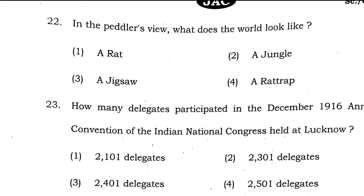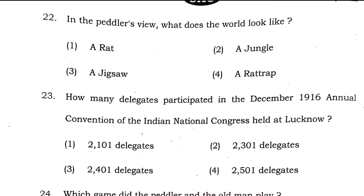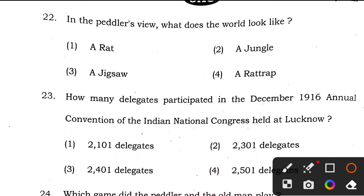Question 22: in the peddler's view, what does the world look like? It looks like a mousetrap. The answer is option 4. Question 23: how many delegates participated in the December 1916 annual convention? This is from the Indigo chapter, and the right answer is option 2 — 2,301 delegates.